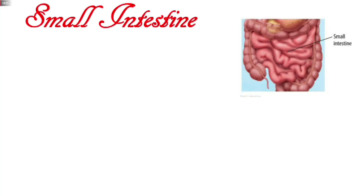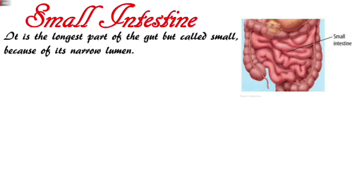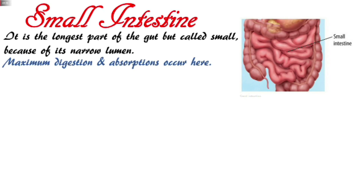Hello everyone, today we will start with the small intestine — its diagram — and we will also understand what it is. It is located in the abdominal cavity and is the longest part of our gut. We call it the small intestine because it is small in diameter, only 2-3 cm. This region is responsible for maximum digestion and absorption.